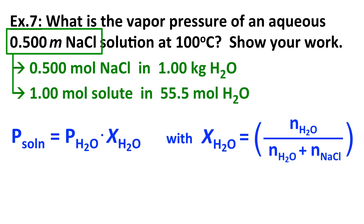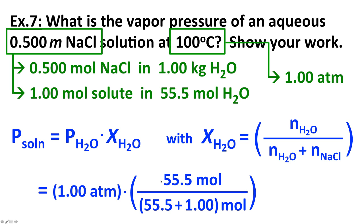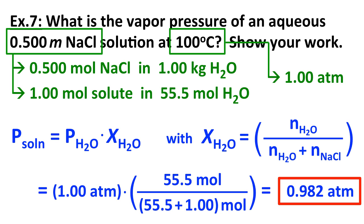We now have the moles of solute and the moles of water. At 100 degrees Celsius, the vapor pressure of water is 1 atmosphere. Plugging into Raoult's Law: vapor pressure of solution equals 1 atmosphere times (55.5 moles H₂O) divided by (55.5 + 1 moles). Moles cancel, leaving atmospheres, and we get 0.982 atm — a little less than 1 atm, which is expected since the vapor pressure of a solution is lower than that of the pure solvent.